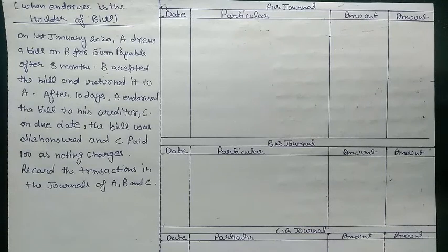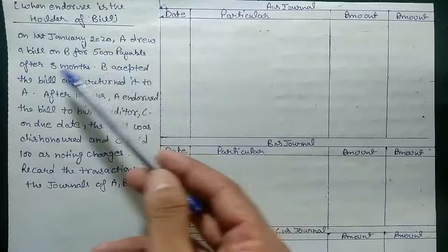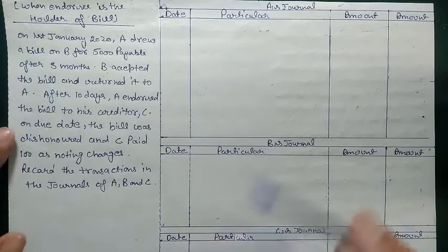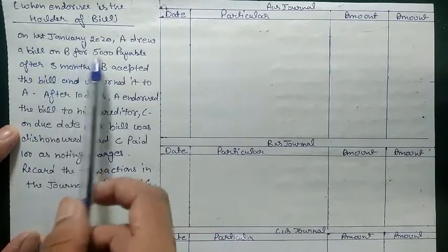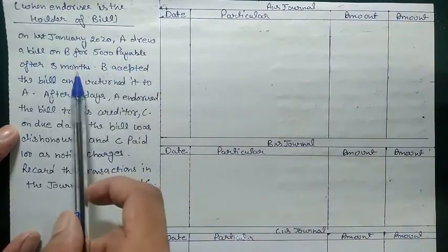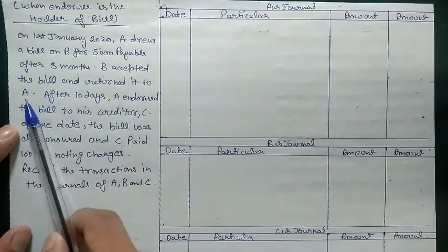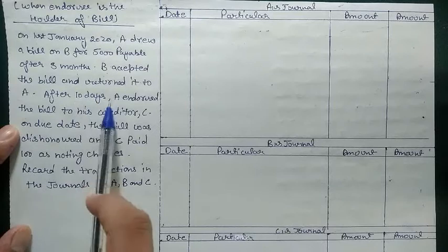So we will have a question on dishonor in the case where the endorsee is the holder of the bill. The question is: on 1st January 2020, A drew a bill on B for 5000 payable after five months. In this question we do not have a sale entry — the bill is directly drawn on B — so we will not post the sale entry in the books of A or B. B accepted the bill and returned it to A, all on 1st January.